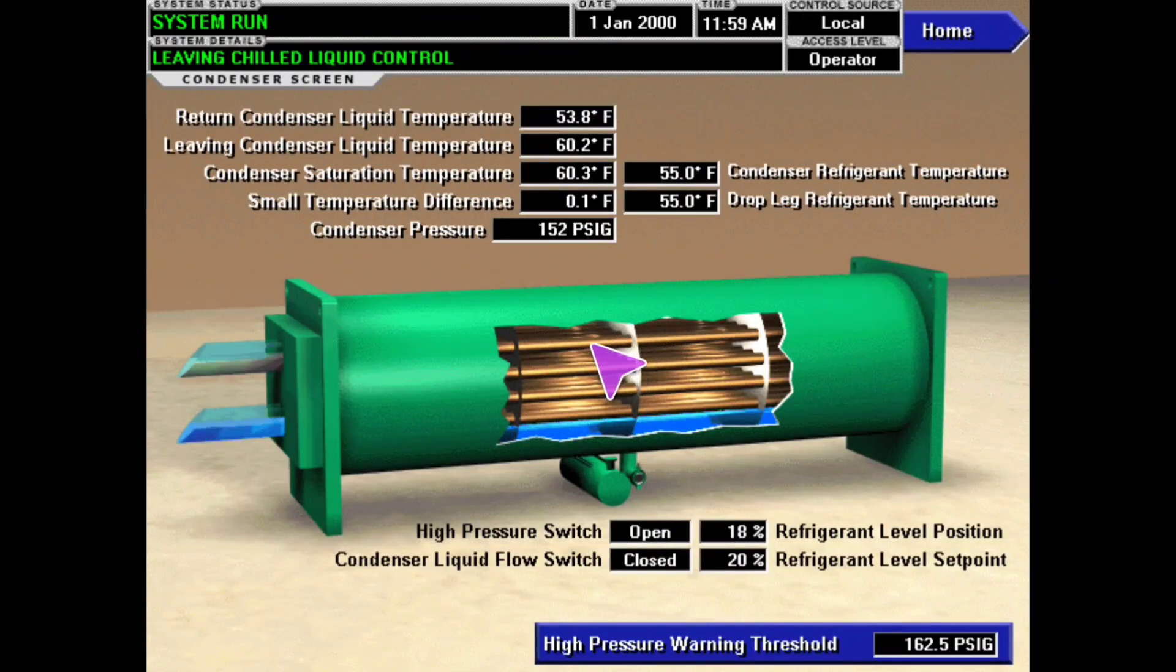This would be considered more of a flooded type design, but this is a condenser. This specifically came from a York OptiView control panel, but it made a really good example for what we're discussing here because of the small temperature difference right there. That is actually the calculated approach value.